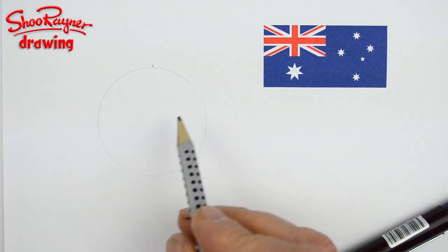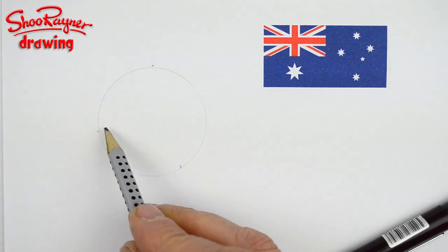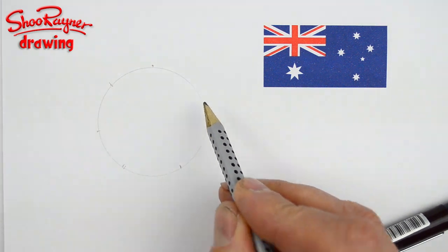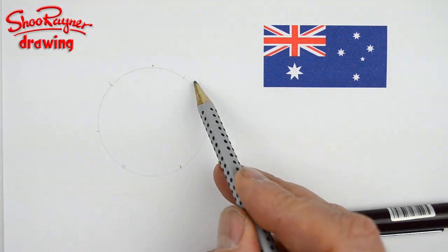You want to put a spot up at the top of the circle there, and then kind of about there, and then you've got to split these up into thirds, so it kind of roughly works out like that.